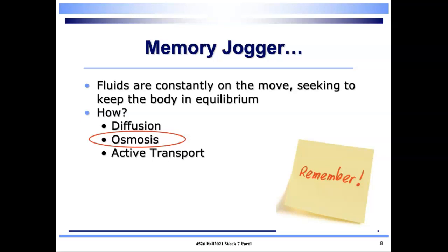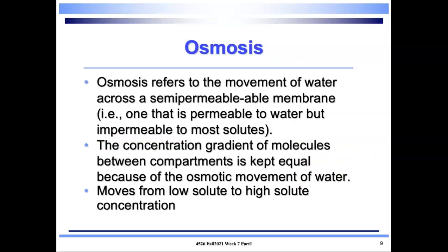For fluid and electrolyte balances we focus on the movement of water, which is osmosis. Osmosis refers to the movement of water across a semi-permeable membrane — permeable to water but not to most solutes. The concentration gradient between compartments is kept equal through this osmotic movement of water, which moves from low to high solute concentration. Osmosis stops when the concentration difference disappears or when hydrostatic pressure builds sufficiently to oppose further movement of water.